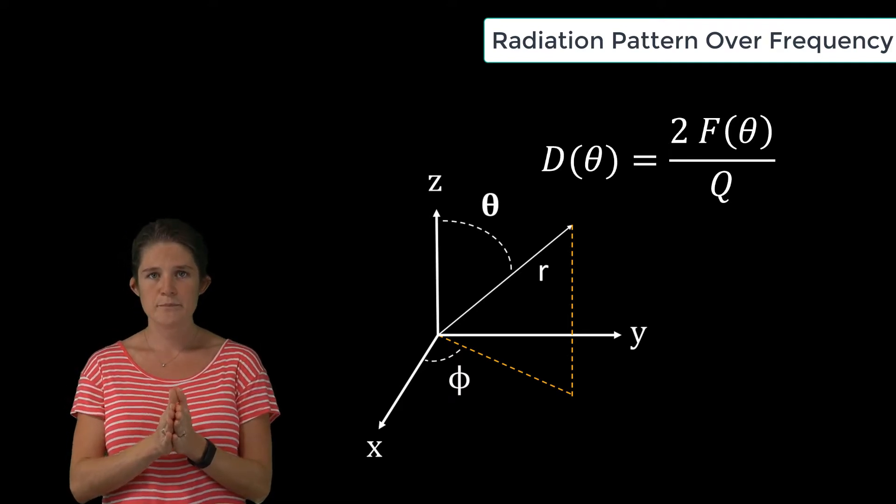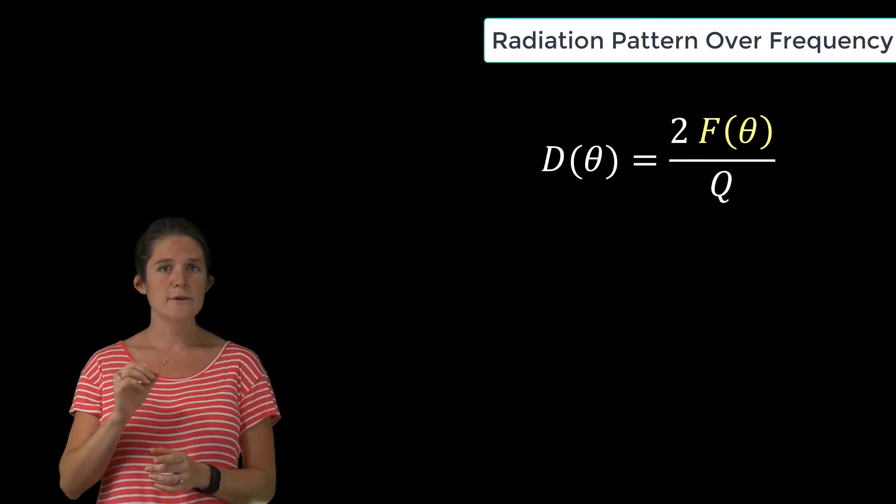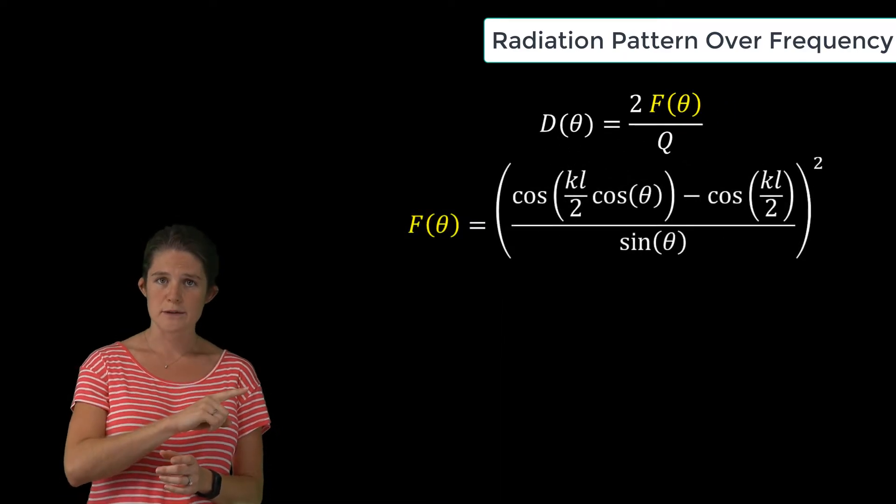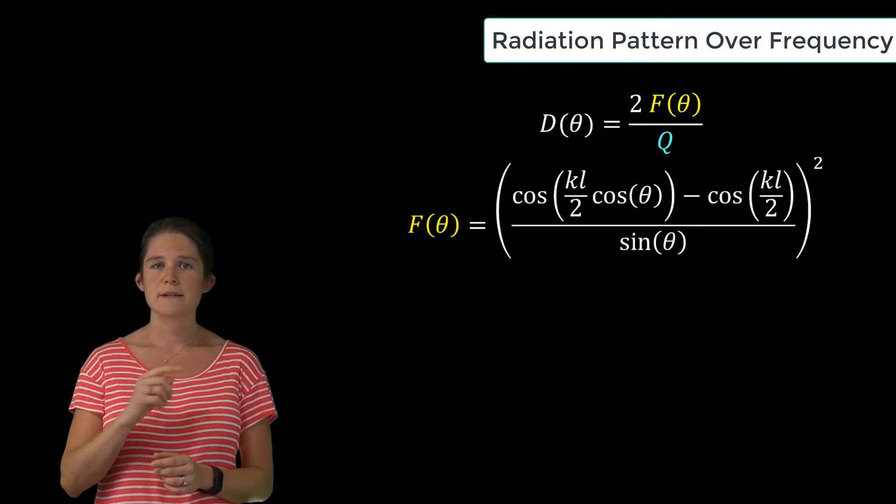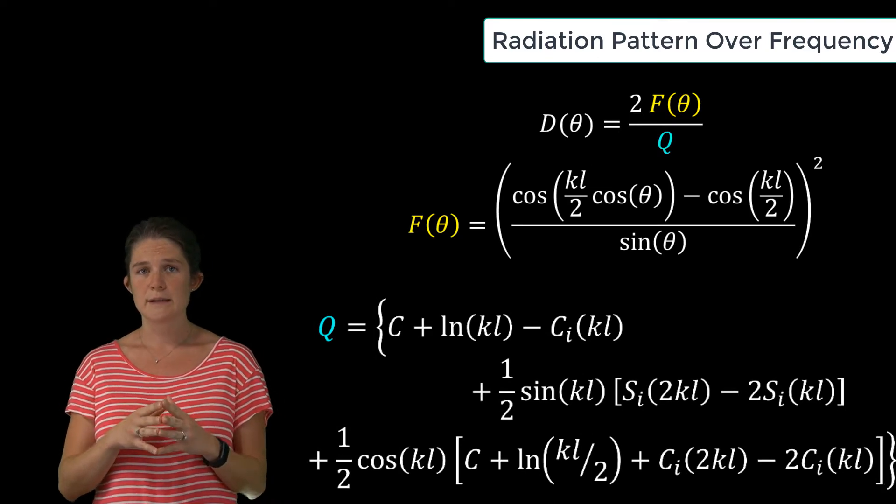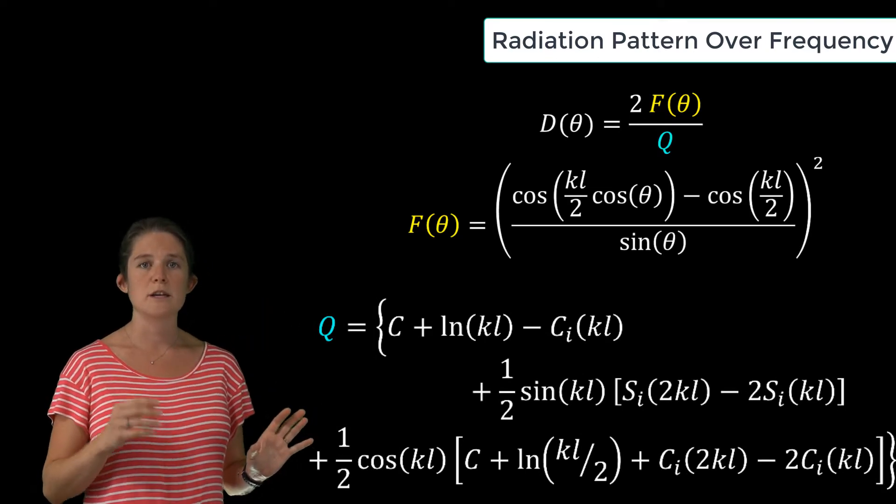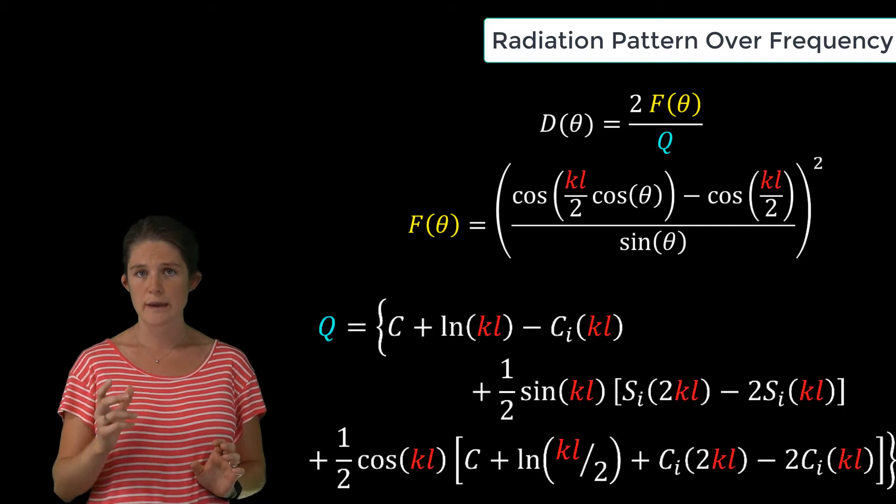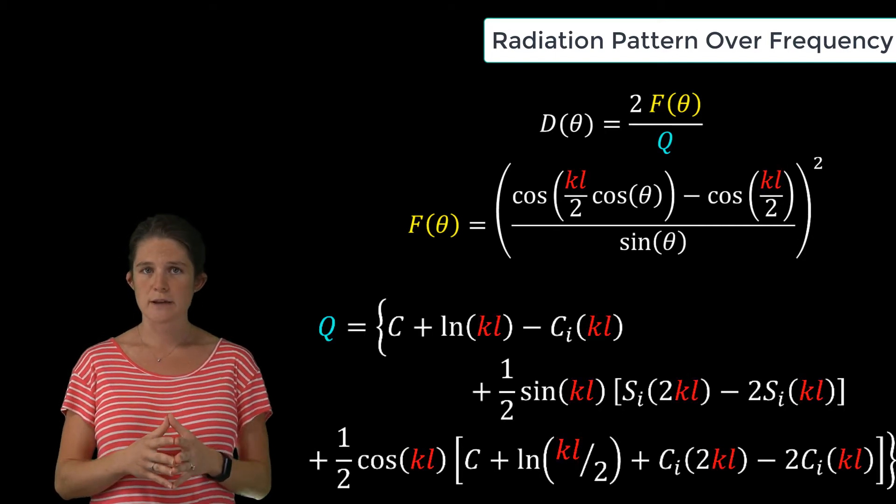So the Phi value doesn't matter. In this equation, F of theta is given by this equation, and Q is given here. Note that like input impedance, the equations for directivity depend on the electrical length KL, not on the physical length L.